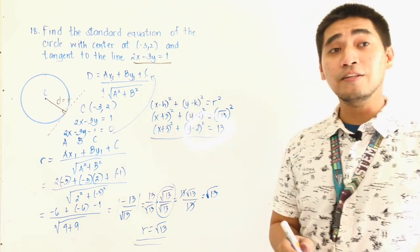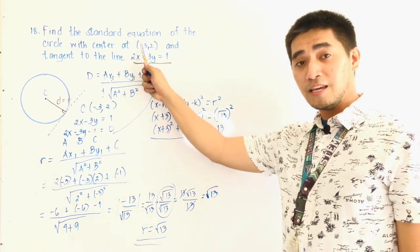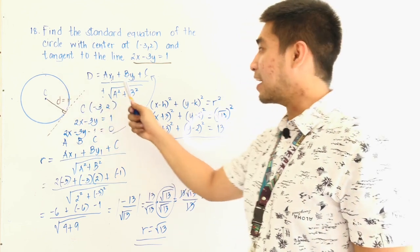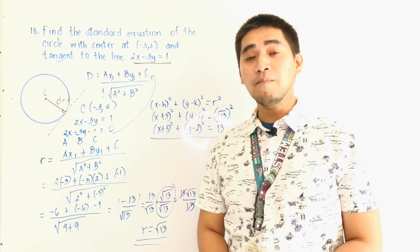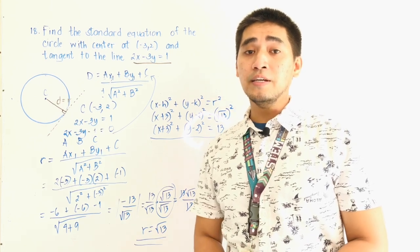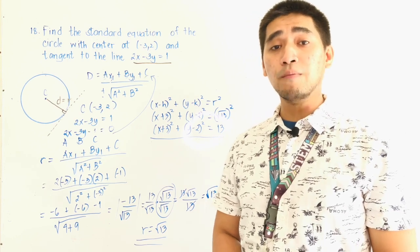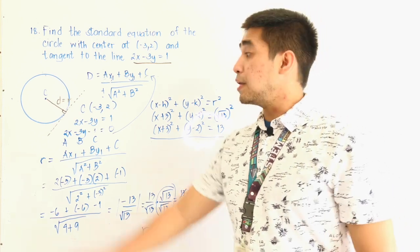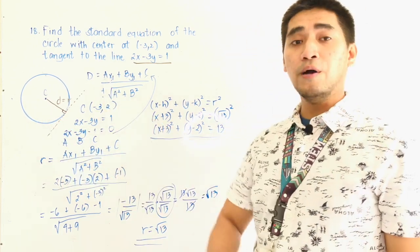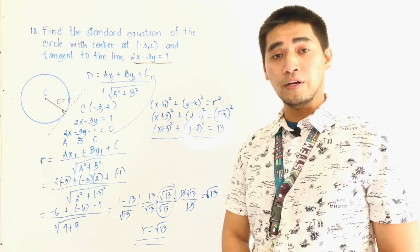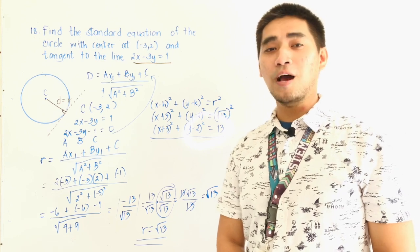This is the standard equation of a circle with center at negative 3, positive 2, and tangent to the line 2x minus 3y equals 1. Always remember: if you are given a center and a tangent line, use the formula for the distance between a point and a line — ax₁ plus by₁ plus c all over the square root of a squared plus b squared — to find the radius.